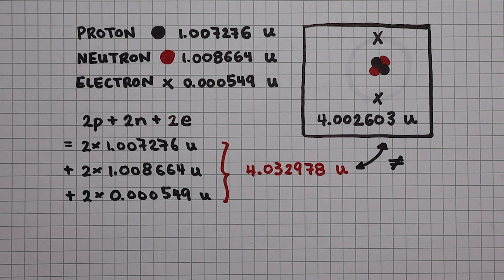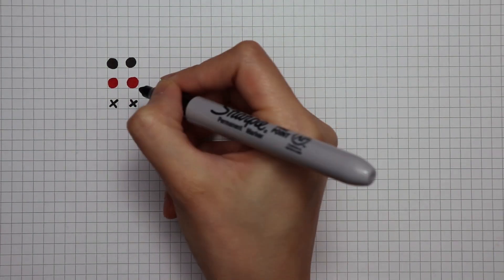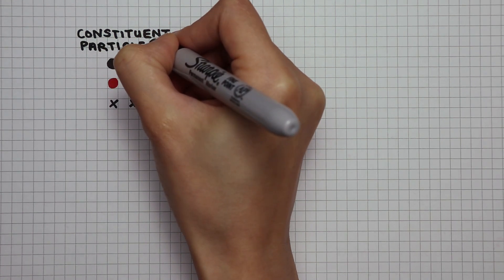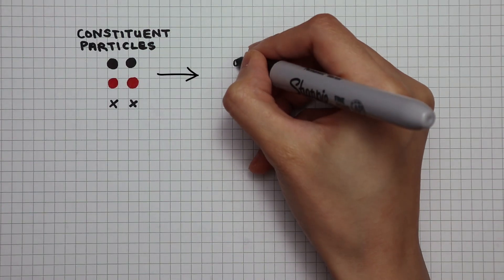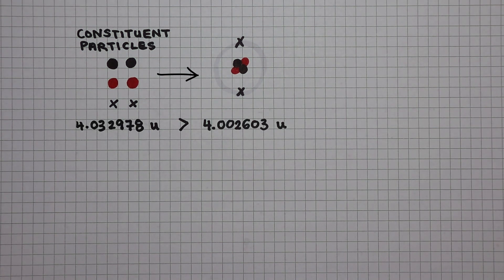Let's think about what's going on here. When I have protons, neutrons, and electrons separated from each other, we call them the constituent particles. From these constituent particles, I create my helium atom, which has a mass less than the mass of the constituent.